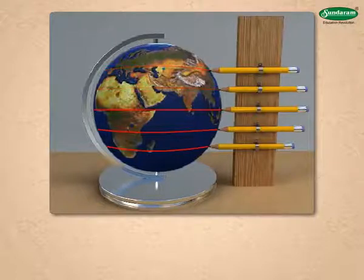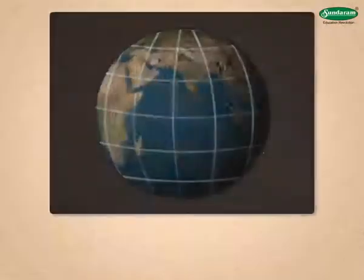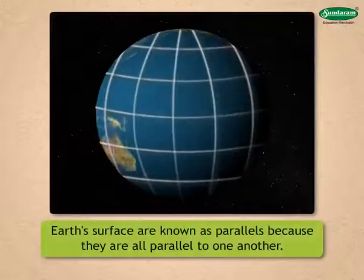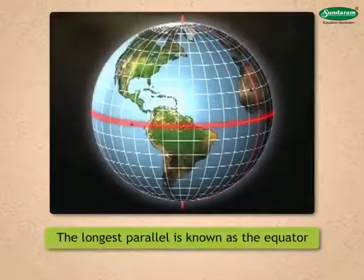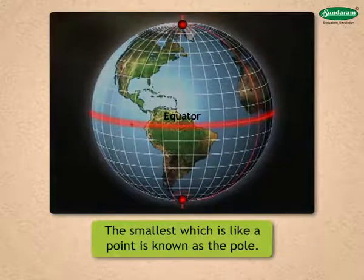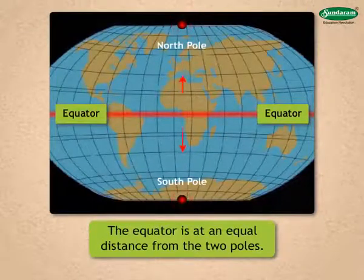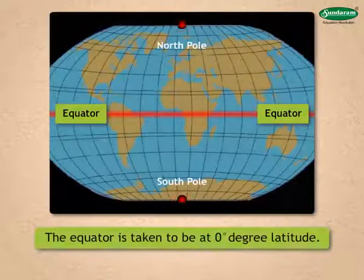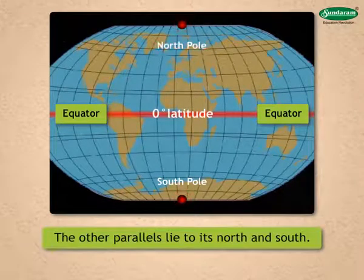The circle formed at the middle of the ball is the biggest circle. The circles that form above and below it are smaller and smaller. All these circles are actually horizontal lines that run right across the surface of the ball. Such imaginary circular lines on the earth's surface are known as parallels because they are all parallel to one another. The longest parallel is known as the equator, and the smallest, which is like a point, is known as the pole. The equator is at an equal distance from the two poles and is taken to be at zero degree latitude.